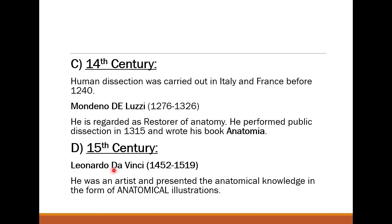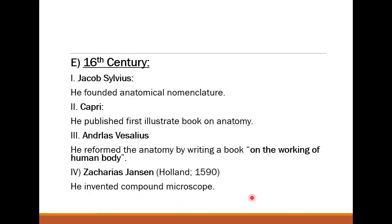In the 15th century, Leonardo da Vinci (1452–1519) was an artist who presented anatomical knowledge in the form of anatomical illustrations. In the 16th century, Jacob Silvius founded anatomical nomenclature — establishing how to name organs and parts of gross anatomy, such as muscles and parts of the lungs.